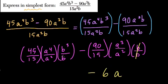...we have b to the 3rd divided by b, or just b to the 1st there. So it's b to the 3rd divided by b to the 1st. Subtract the exponents, we get b to the 2nd power. a to the 4th over a squared, subtract the exponents, that's a to the 2nd, and 45 over 15 is just 3.